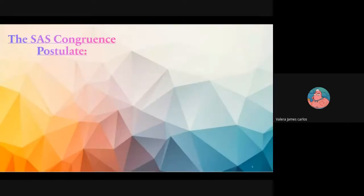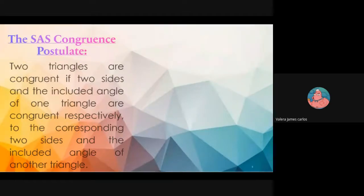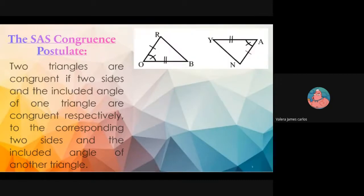Let us proceed to the SAS congruence postulate. This is still review since it was discussed before. When we say SAS, two triangles are congruent if two sides and the included angle of one triangle are congruent respectively to the corresponding two sides and the included angle of another triangle. Before going to the two-column proof, we must know how to identify corresponding congruent parts.